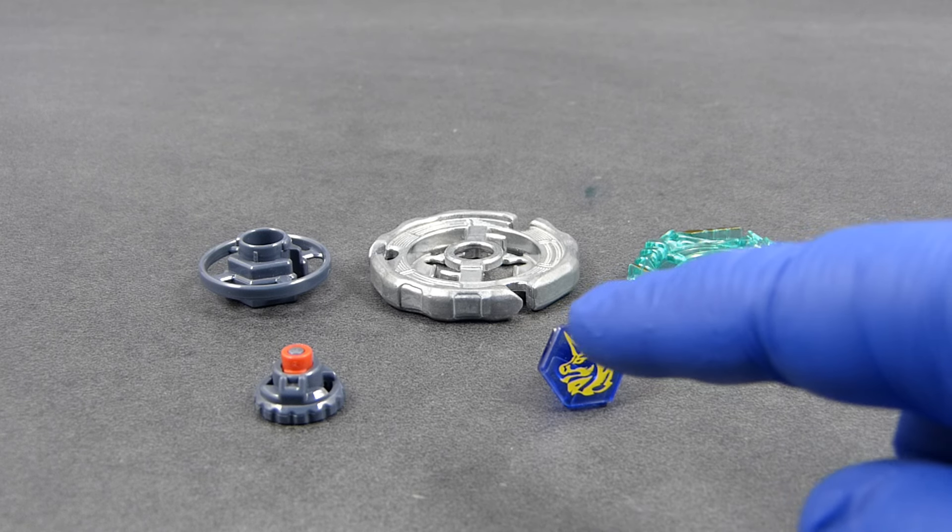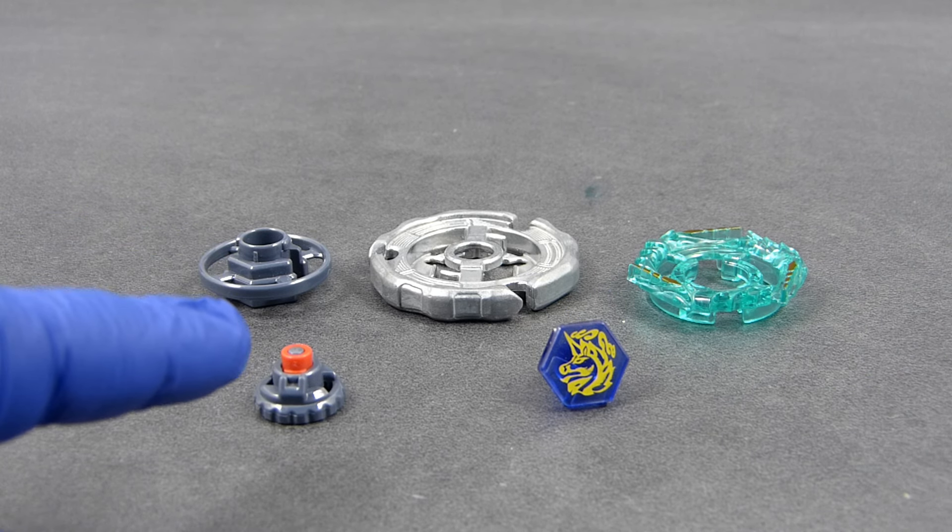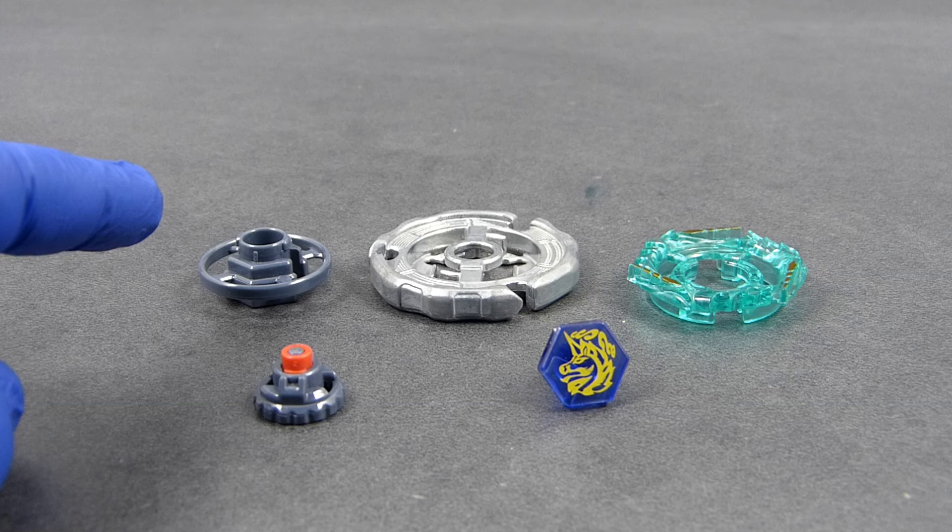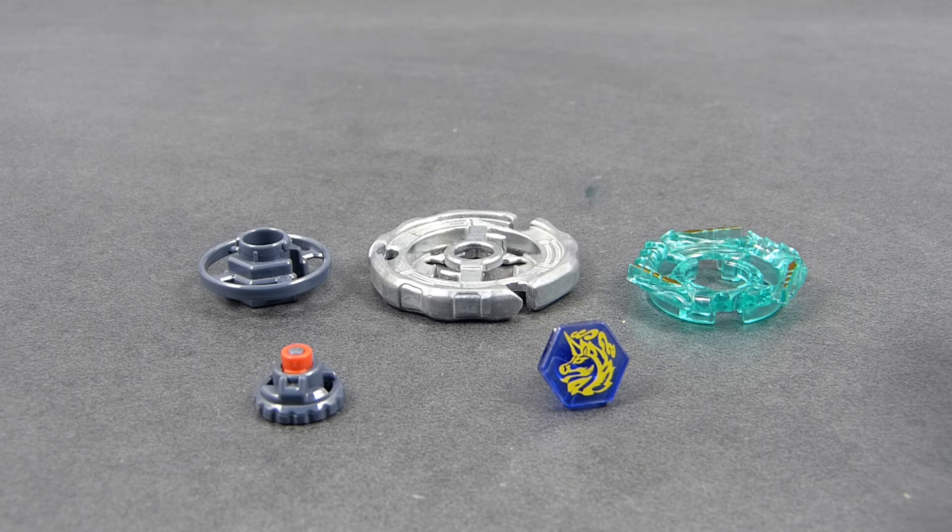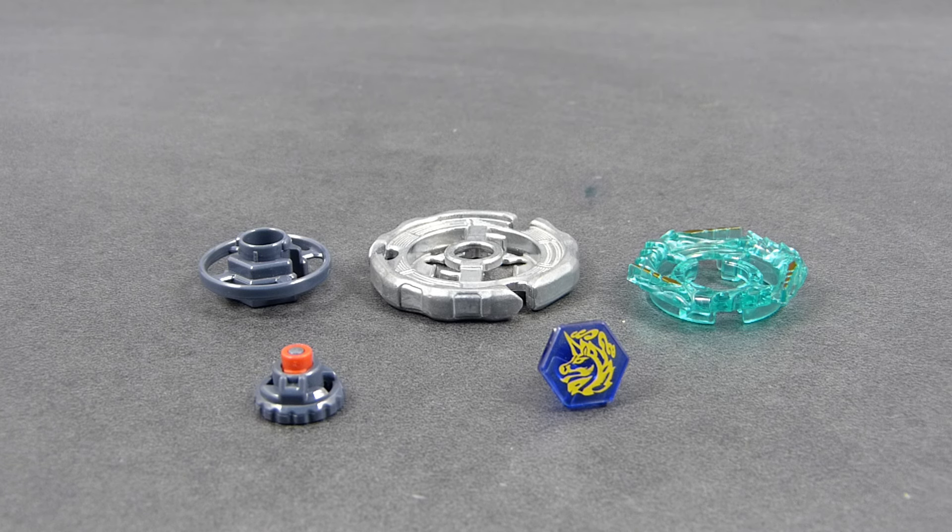So here we have the face bolt, the performance tip, spin track, fusion wheel, and energy ring, and all of these interlock nicely. Let's start from the bottom to the top.